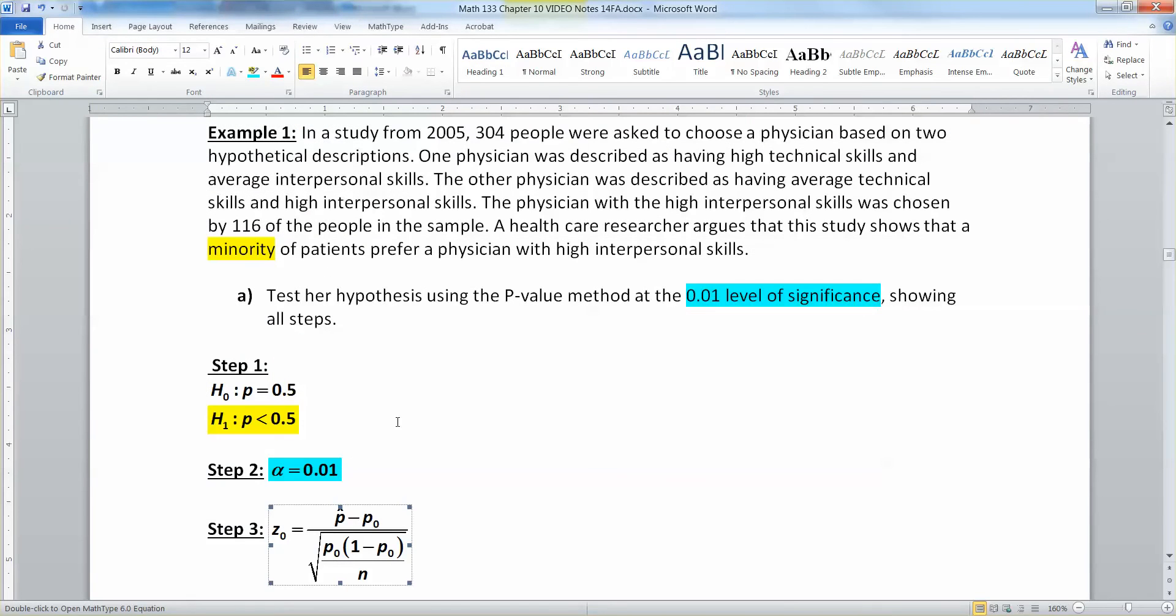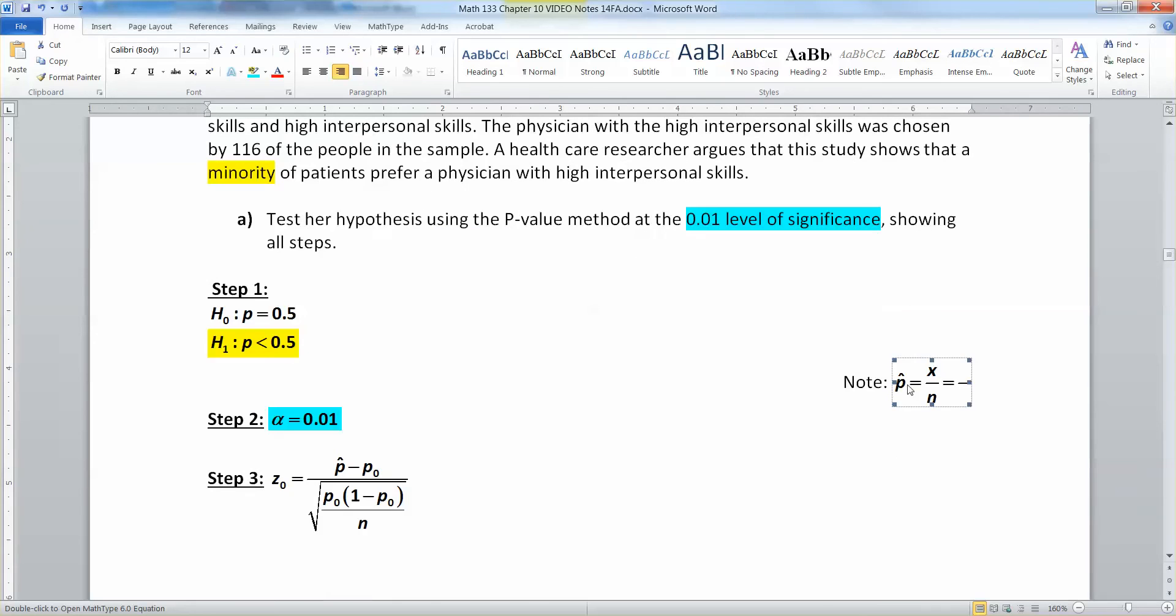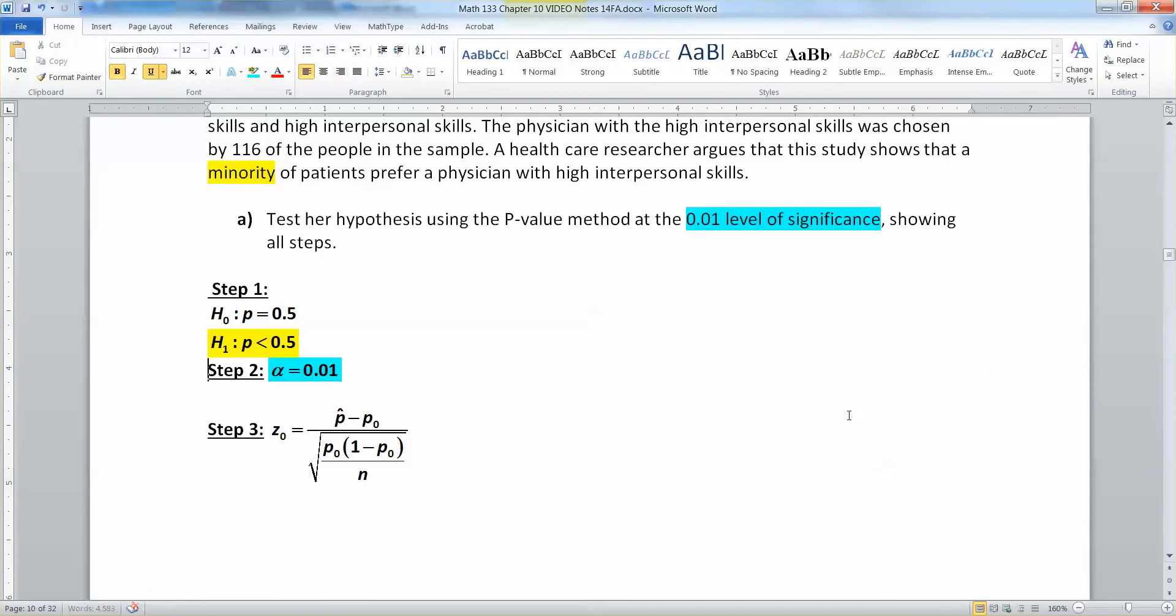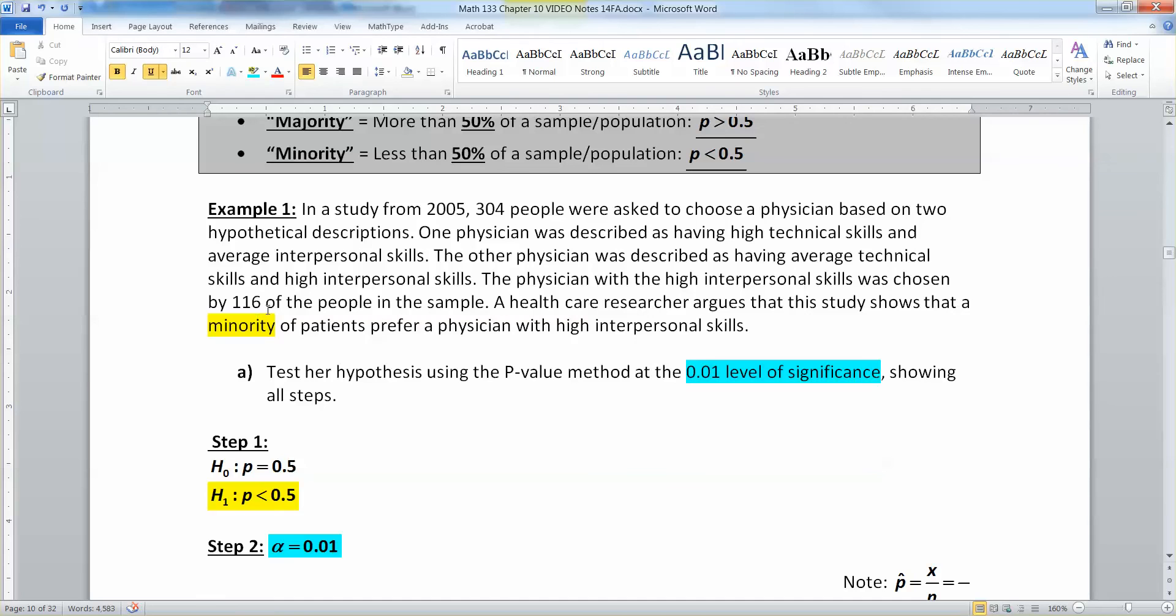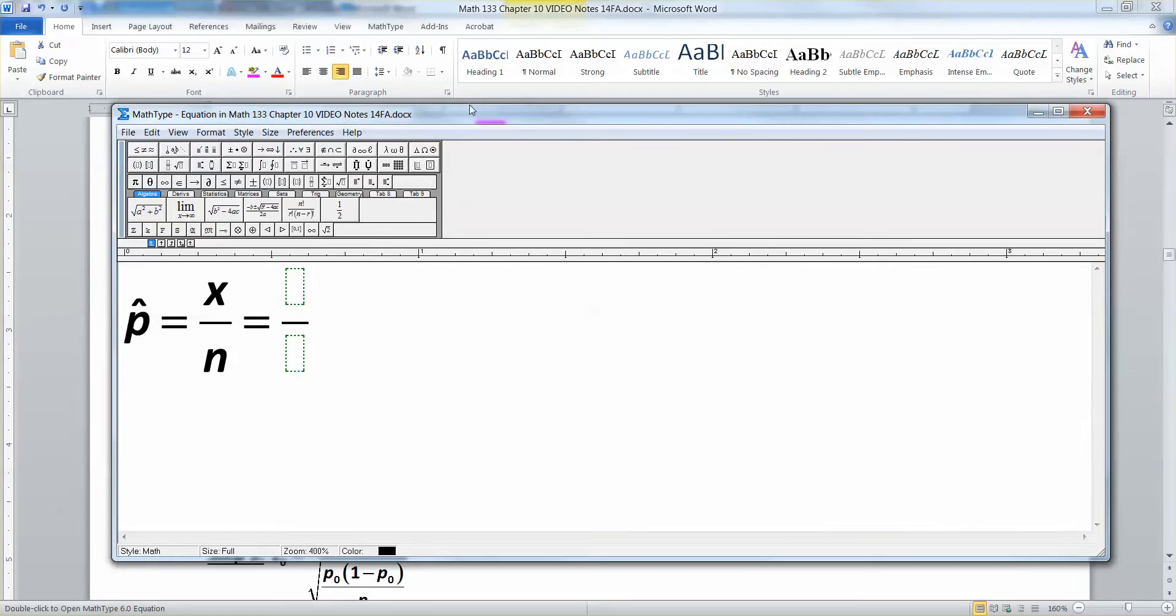Alright, well, we're going to have to go figure out P hat for a second. So, note, there, I have it kind of started over here. So, P hat, remember, we have a formula for it. It's X over N. So, if that's the case, and it's X over N, then we're going to need to figure out what X and N are. So, if we read in the paragraph some more, we'll discover that X is 116 right here, and N is 304. Ignore the 2005. That's not a value. That's actually just a year.